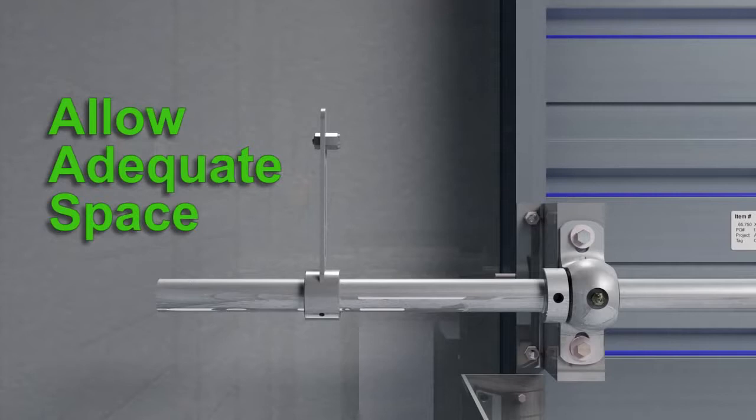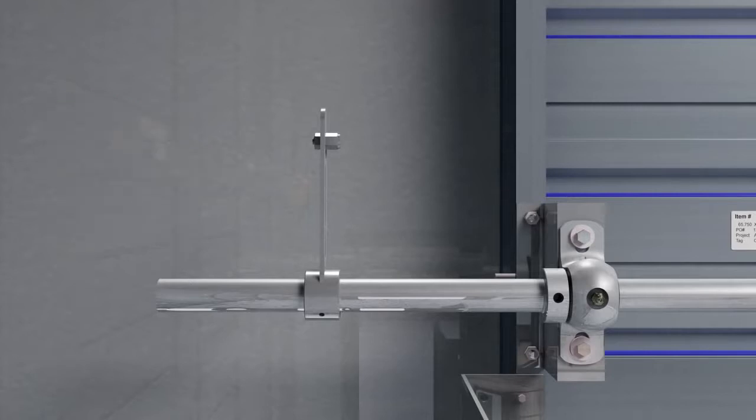Allow adequate space on the jackshaft for actuator mounting and service. A standard jackshaft extends 10 inches beyond the exterior of the damper frame. You can adjust this length by sliding the rod to the left or to the right.